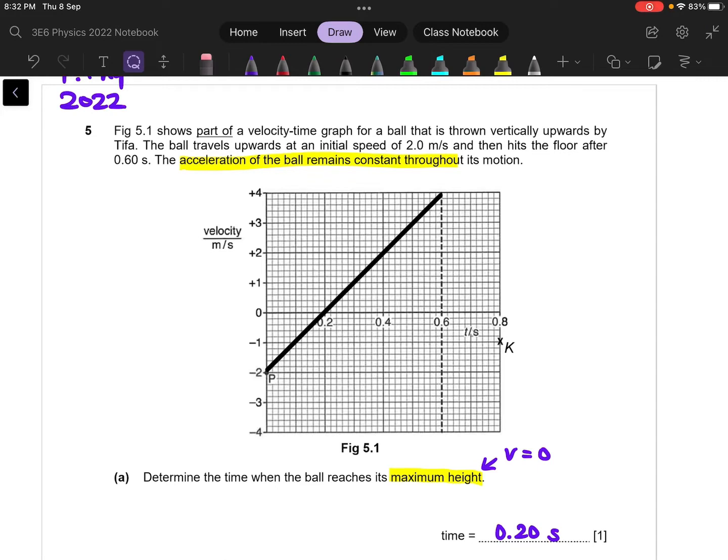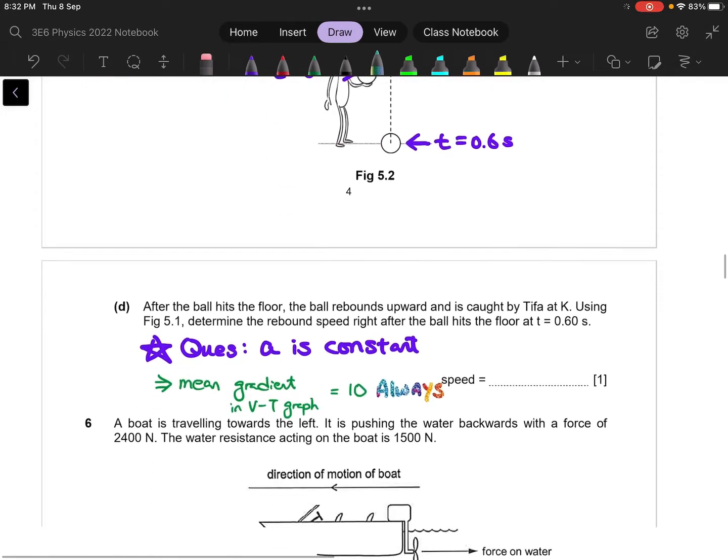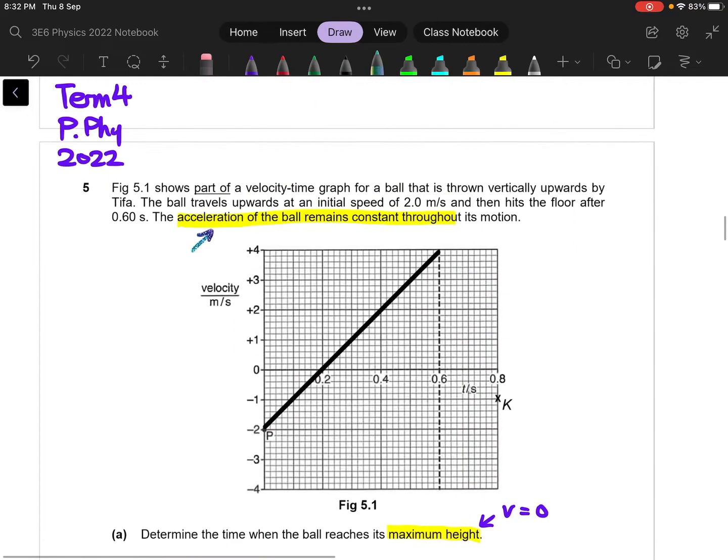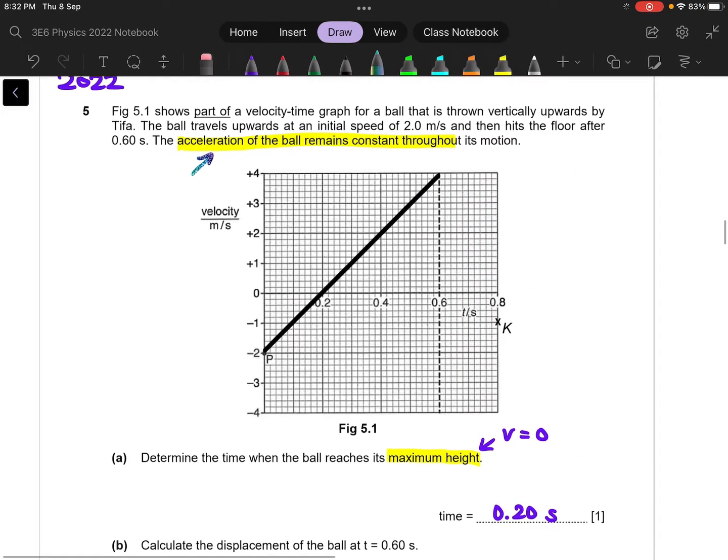So anyway, I changed the question slightly. In fact, I make it easier. Rather than asking you to sketch the entire graph, I have given you part of the graph. I have given you a direct hint, and that is the acceleration of the ball will remain constant throughout its motion. And you have to use this hint to actually solve the last part of the question here.